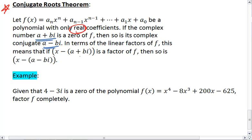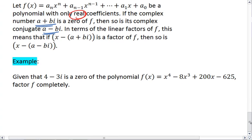Again, this is something that's sometimes easier seeing with an example. We are given that 4 minus 3i is a zero of the polynomial f of x equals x to the fourth minus 8x cubed plus 200x minus 625. We want to factor f completely.